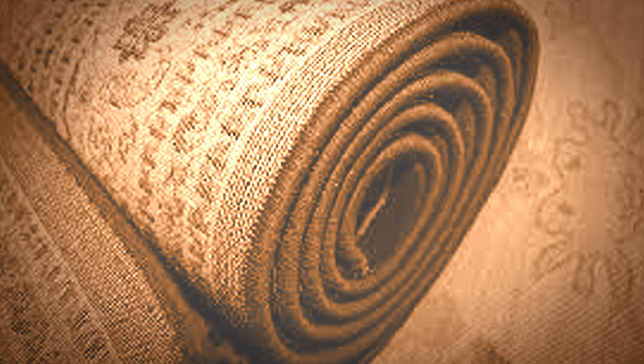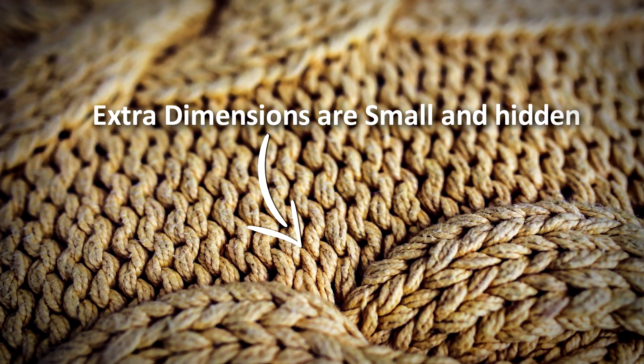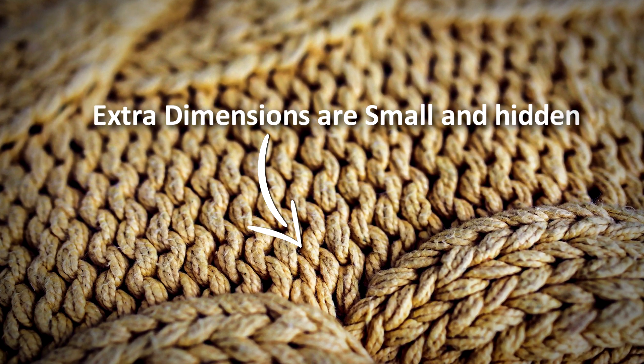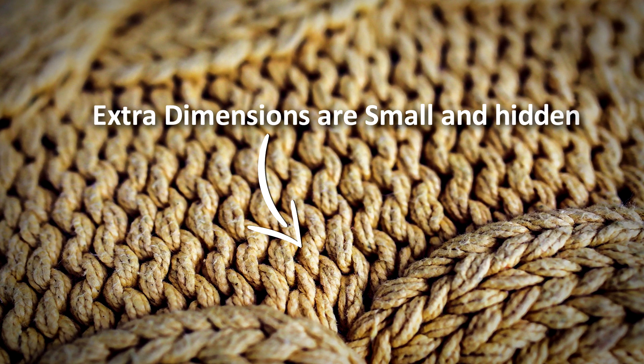String theorists will tell you that these dimensions are so small that we cannot perceive them. This is similar to a rug. From a distance, it looks three-dimensional, but up close you can see that it has loops and weaves. These would be analogous to the extra dimensions that we can't see in our ordinary space.